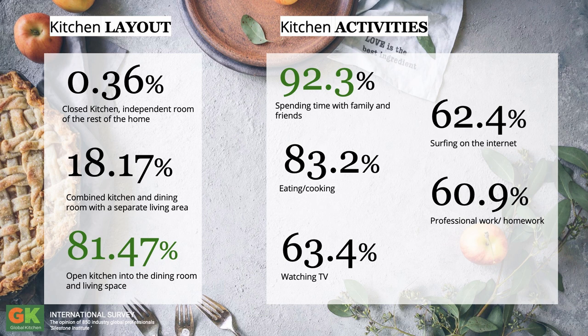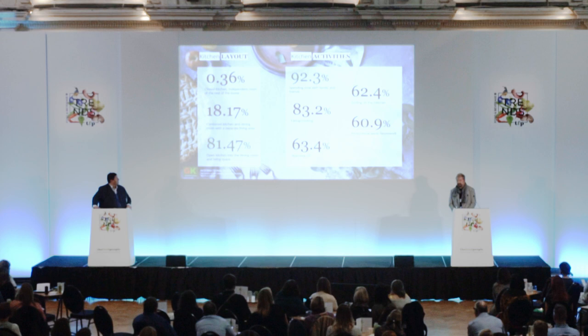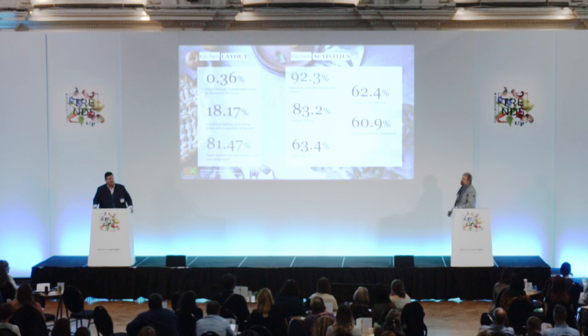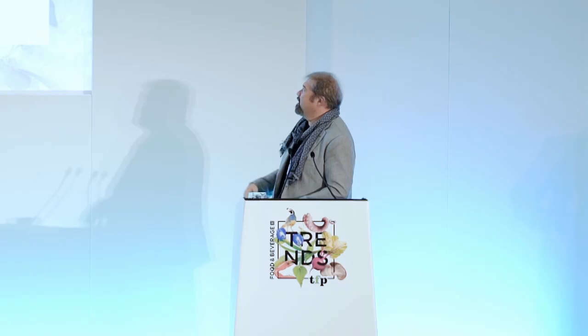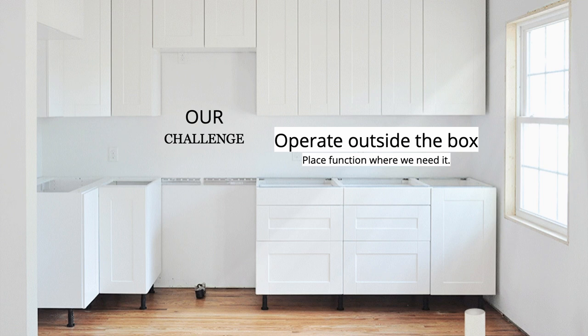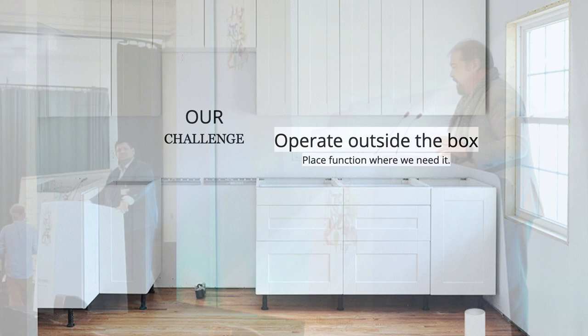We surveyed 900 professional experts from different countries around the world, asking how the kitchen layout will look in 20 years. Nearly 82 percent said it needs to be open with the dining room and living room. The activities that will grow in the kitchen include spending time with family and friends, eating, cooking, watching TV, working on the computer, home working, and activities with children. This requires that the kitchen area be very flexible. My first responsibility is to understand what I can do with that space.